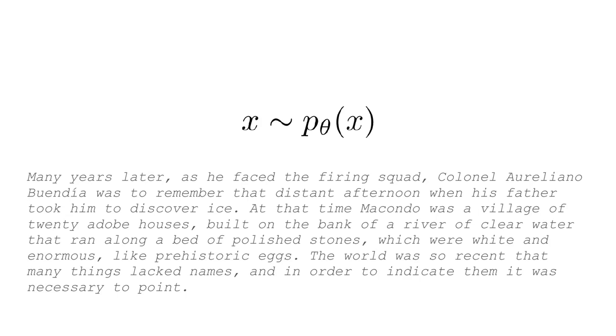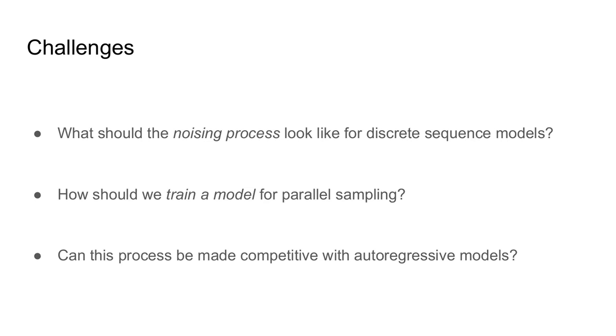Several people have thought about this problem before in the past, but there are some interesting challenges involved when doing non-autoregressive generation. In particular, we'll look at three challenges in this talk. The first is how we actually decide which words get filled in at each step. The second is how we go about training a model of this form in order to do this style of parallel sampling. And finally, we'll look at some results about whether these approaches can be made competitive with standard autoregressive models.